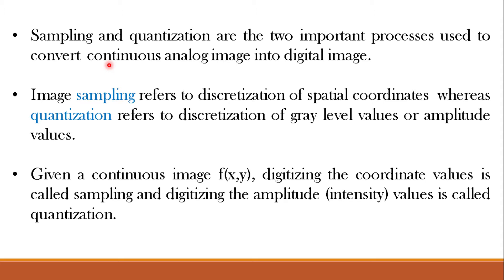An image is basically a two-dimensional representation of a three-dimensional world. The basic requirement for image processing is that the image obtained should be in digital form. For example, we cannot process photographs on an identity card unless we scan it using a scanner. The scanner digitizes the photograph and stores it on the hard disk. Once this is done, one can use image processing techniques to modify the image as per the requirement. Hence, digital image processing is only possible when we digitize the analog pictures.